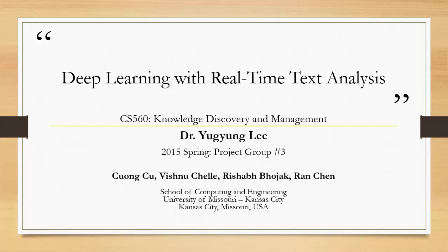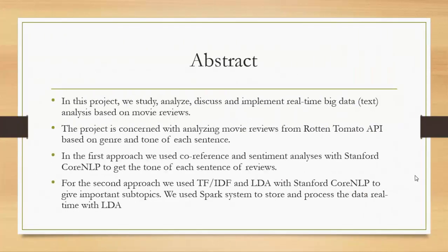As background to this project, we worked with natural language processing tools like OpenNLP and Stanford NLP. In the abstract, we study, analyze, discuss, and implement real-time big data — specifically text in the form of movie reviews. To collect reviews, we explored a couple of APIs and settled on the Rotten Tomatoes API, downloading movie reviews across different genres like action and comedy.